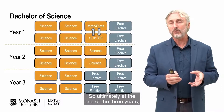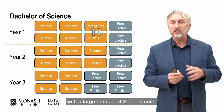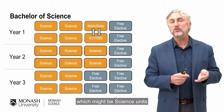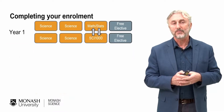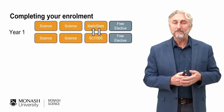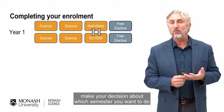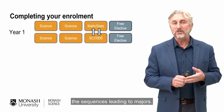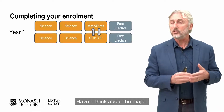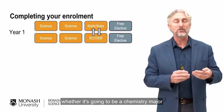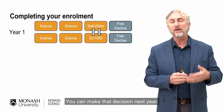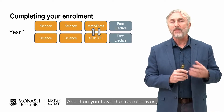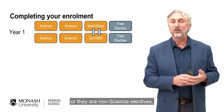At the end of three years, your Bachelor of Science will include a large number of science units, the Mathematics and Statistics and Science Communication Core completed, and a range of free electives — which might be science or non-science units. To complete your enrolment, enrol in your core units and decide which semester to take each. Think carefully about the Mathematics and Statistics Core unit you select. Then select units that will form sequences leading to majors. You don't have to decide your major right now — you can make that decision next year. Select level one sequences that keep your options open, along with your free electives, and those will make up your full time first year load.